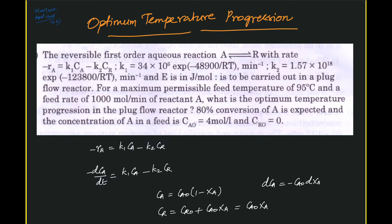This problem is about finding the optimum temperature progression. The reversible first order reaction A giving rise to R, with rate r minus r equal to k1·CA minus k2·CR, is first order forward and reverse. The rate constant values as a function of temperature are given, where E is in joule per mole, so R must also be used in joule per mole.